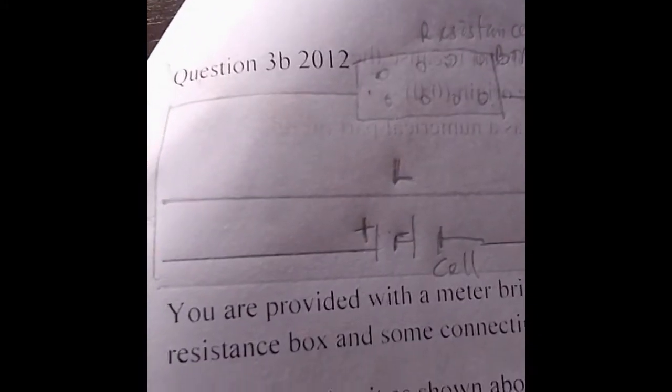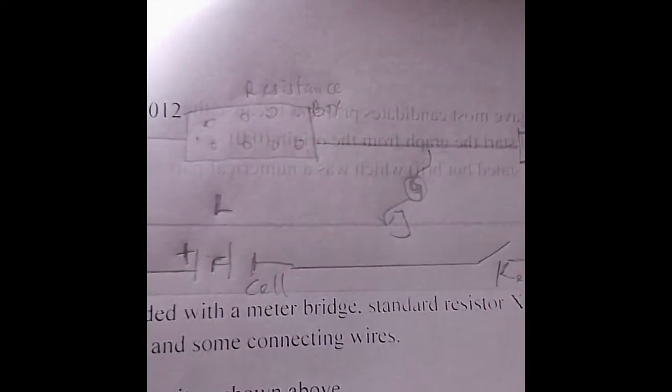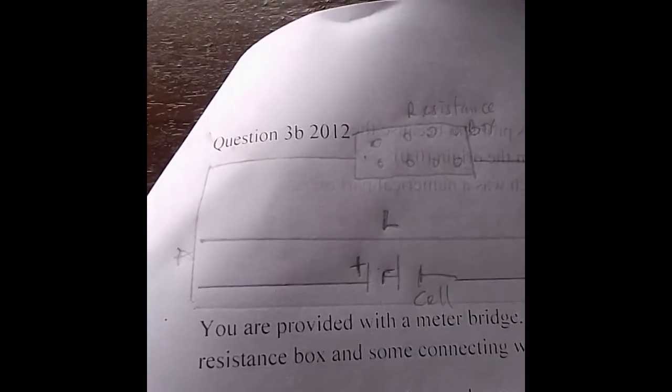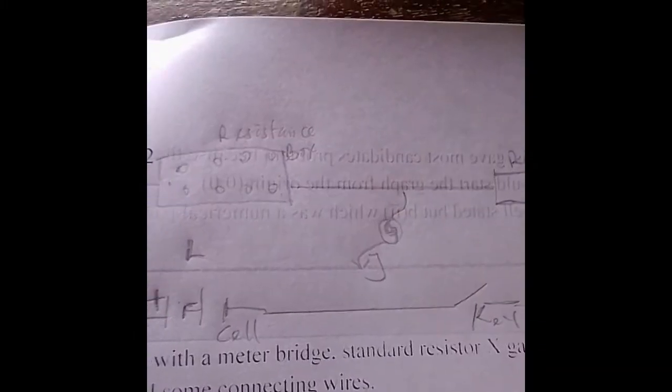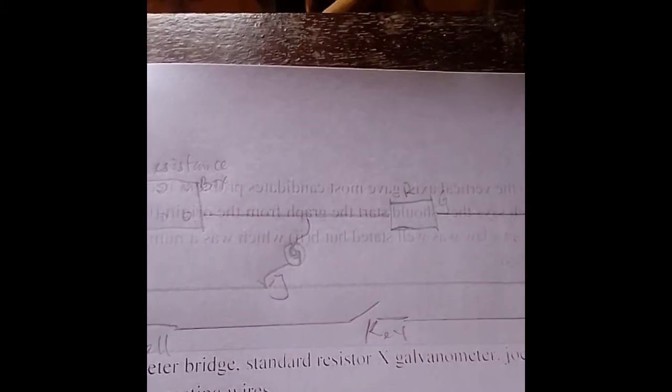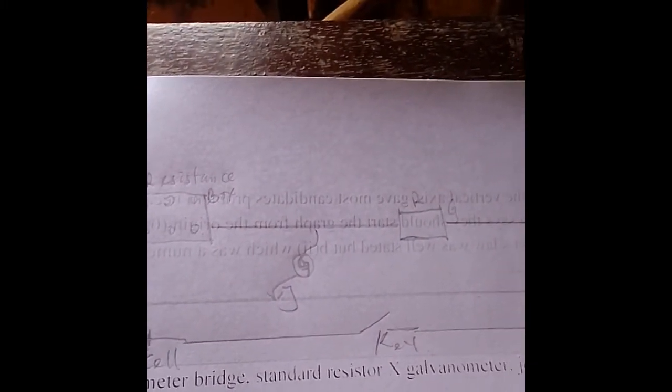Likewise, the value of your L, that is between A and J, that is the zero point of your meter bridge to where it's balanced with the jokey.